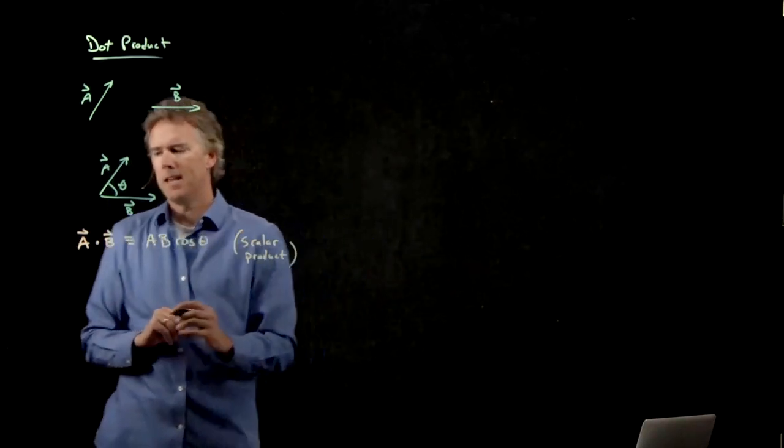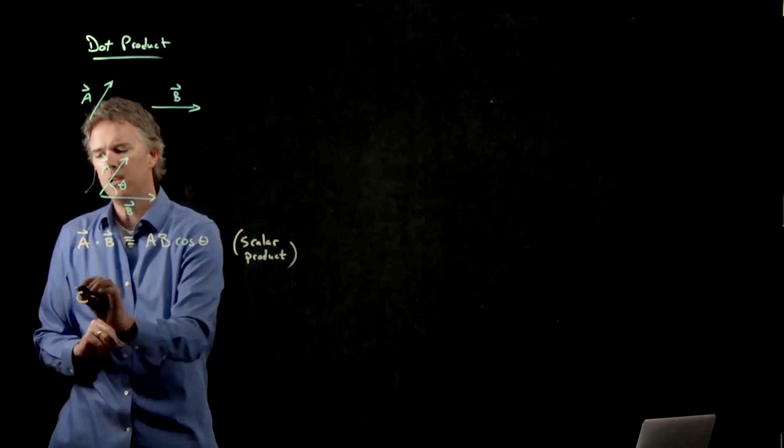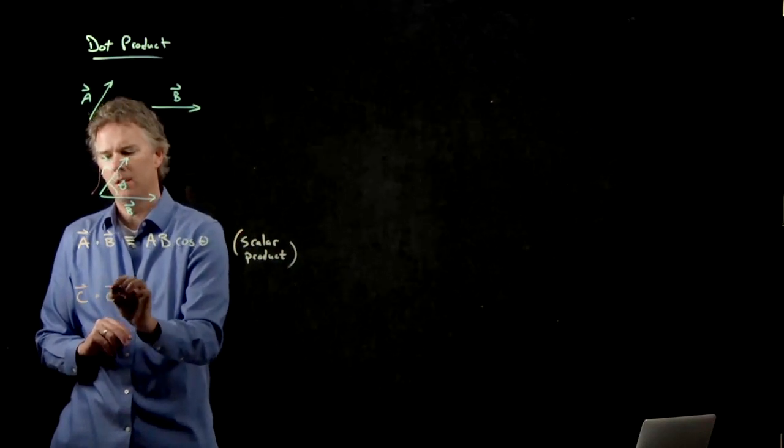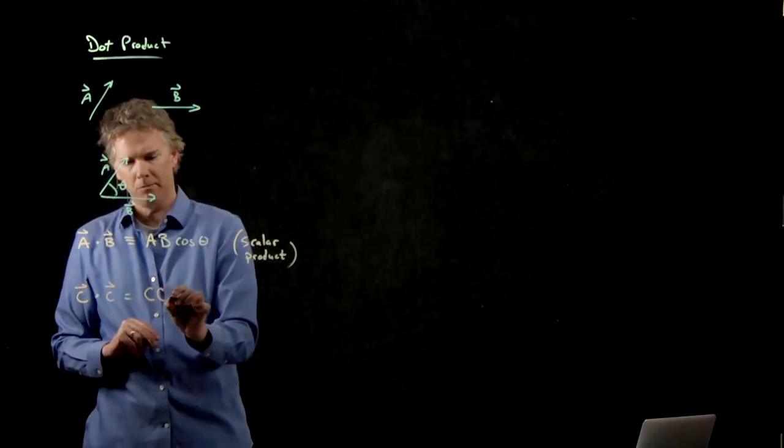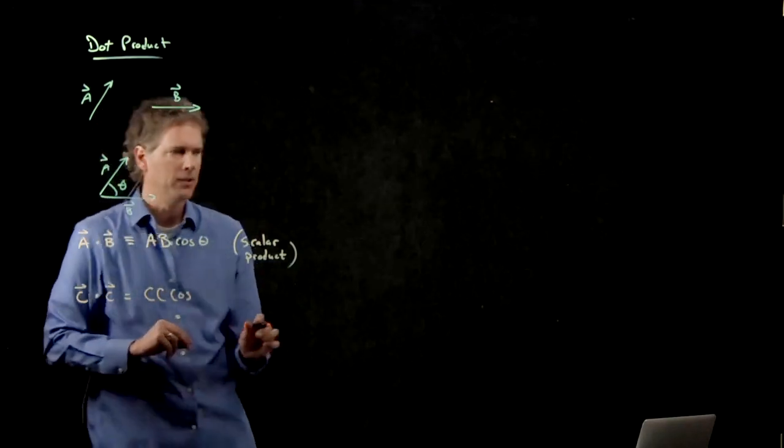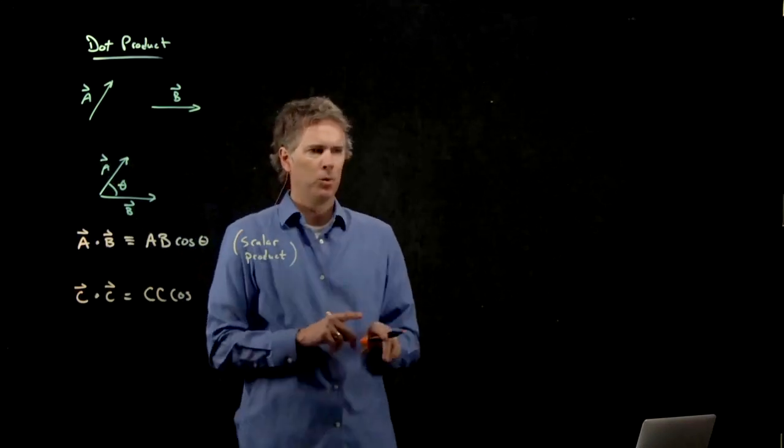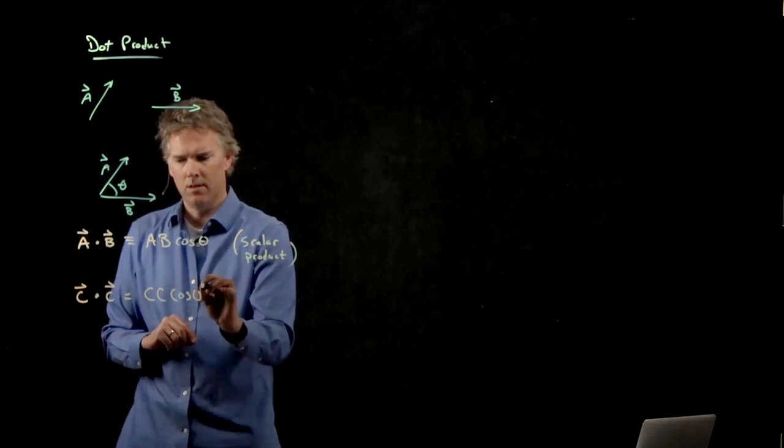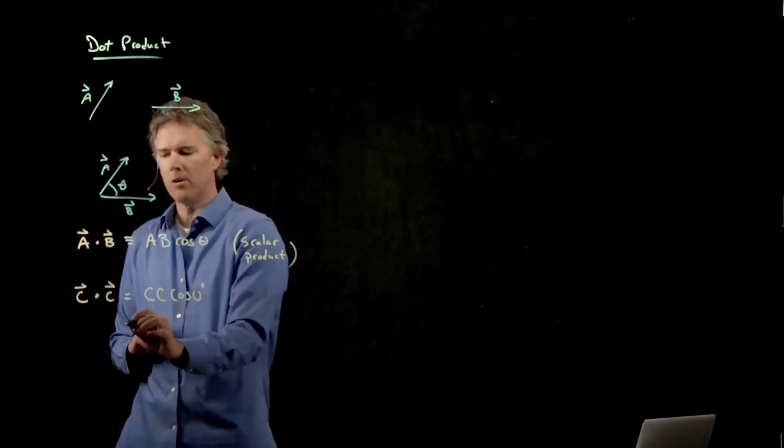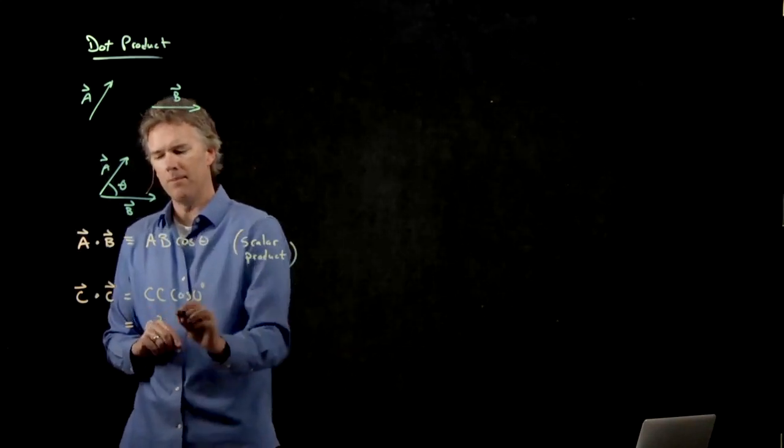Back to the question that we just had. If we have C dot C, what do we get? We get magnitude of C times magnitude of C times cosine of the angle between them. What's the angle between C and C? Zero. And cosine of zero is one, and so we do just get C squared.